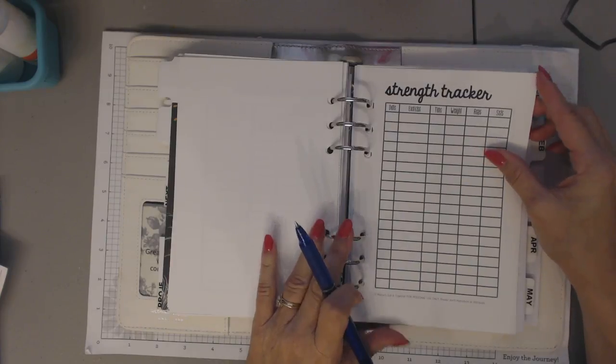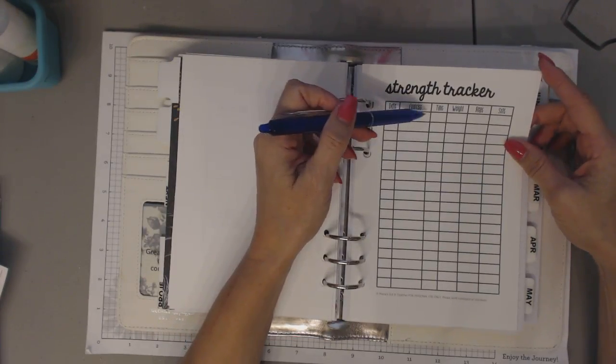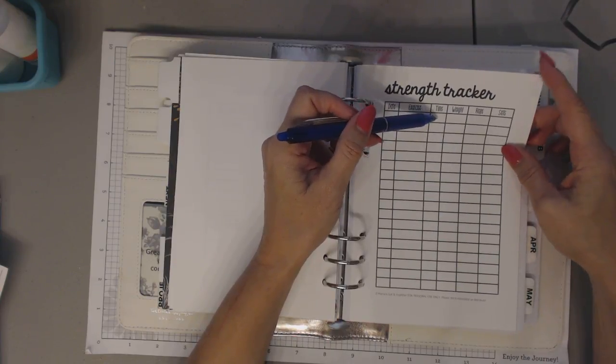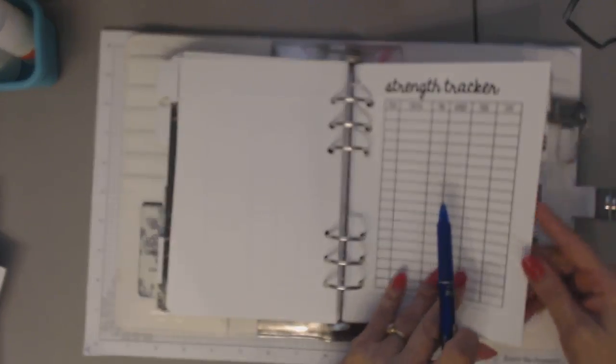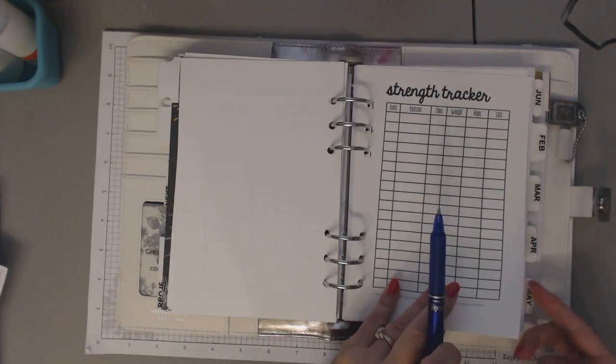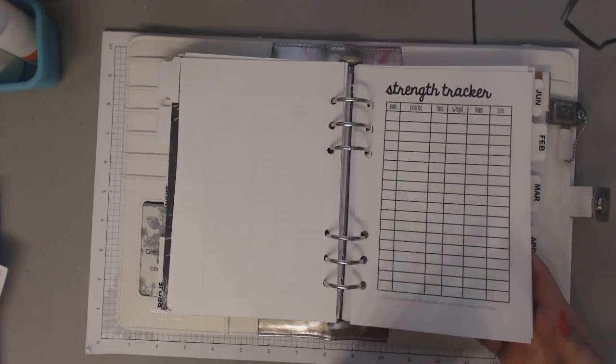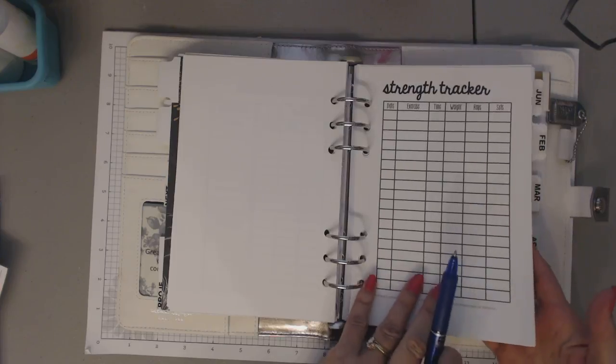Strength tracker. This is the day I go to the gym, which exercise I did, or which machine I used. The time I did it, the weight I used, the reps, and the sets. And I'd really like to start keeping track. As I get stronger, I'm noticing I'm doing more and more. But I'm not keeping track of the evolution of it. And I think that will really help me keep motivated.